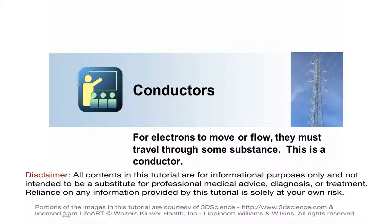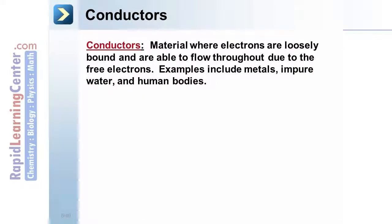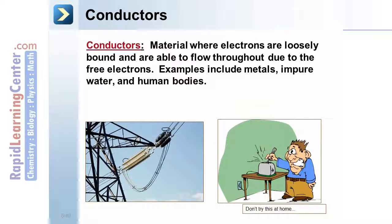Conductors. For electrons to move or flow, they must travel through some substance. This is a conductor. Conductors are materials where electrons are loosely bound and are able to flow throughout due to free electrons. Examples include metals, impure water, and the human body.